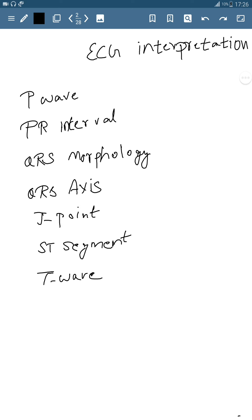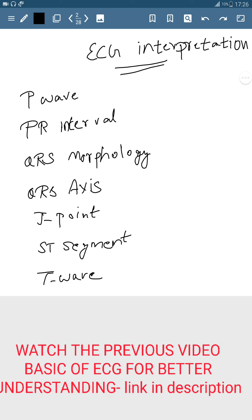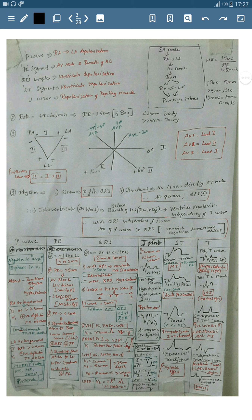Hello friends, welcome to Syramariko. In this video we are going to see about ECG interpretation — specifically the P wave indicating atrial depolarization, PR interval indicating AV node and bundle of His depolarization, QRS morphology indicating ventricular depolarization, QRS axis, the J point, ST segment, and T wave. Before going further, please watch the previous video where I discussed the basics of ECG and its principles. This is a summary paper of the whole ECG — take a screenshot and after watching the full video you can understand it in detail.